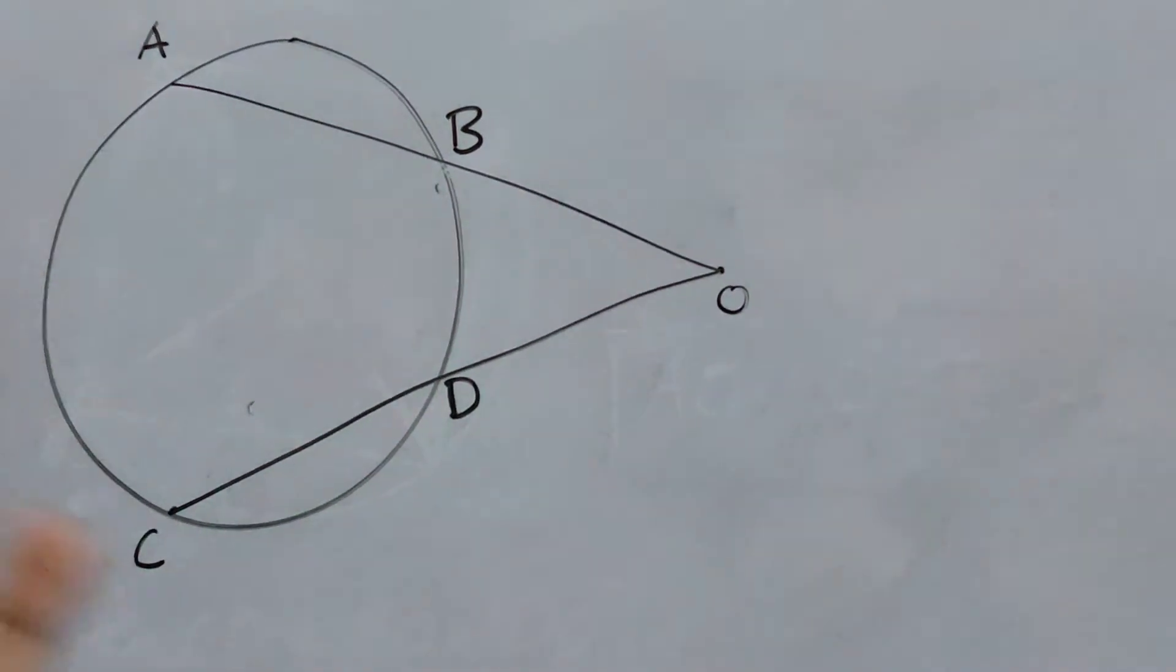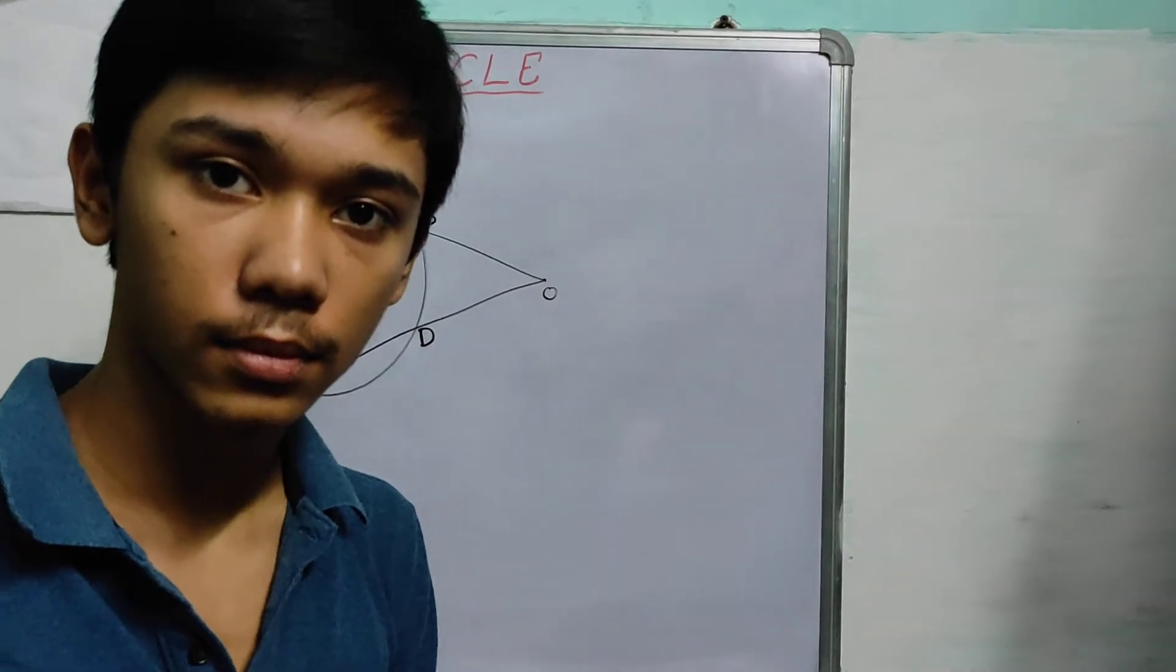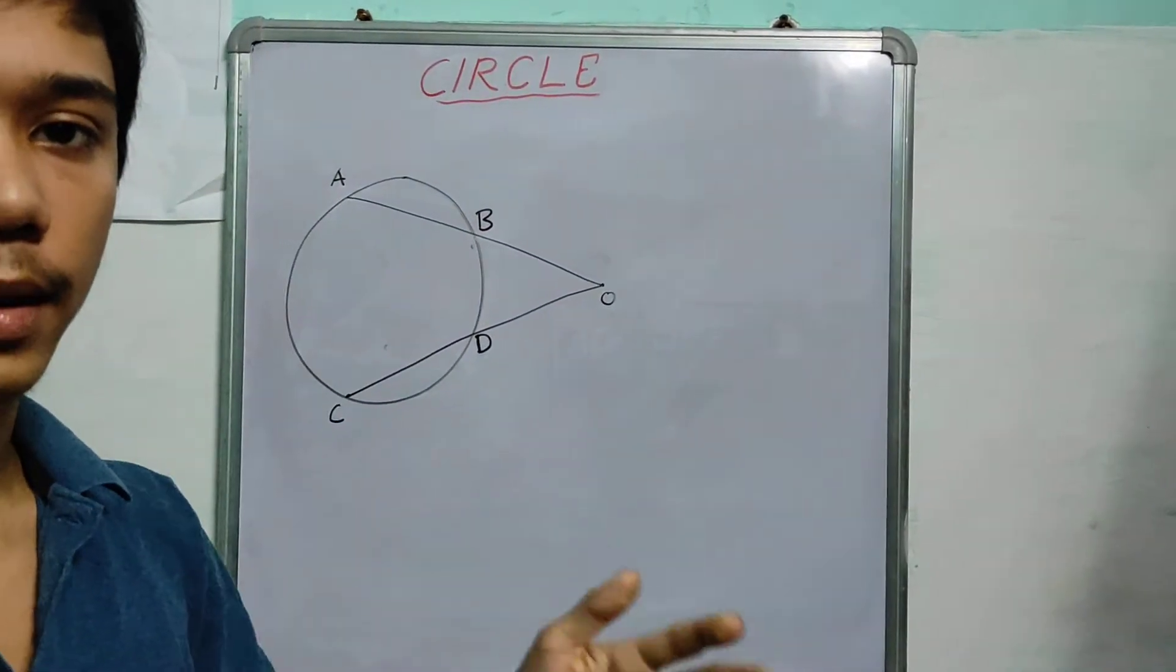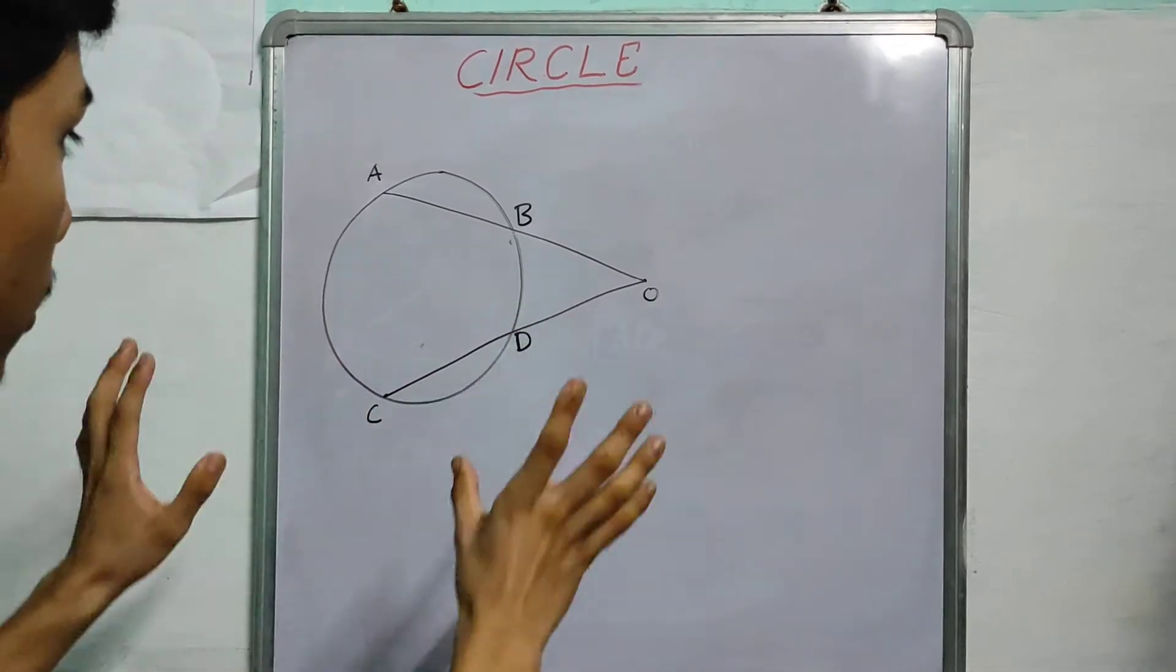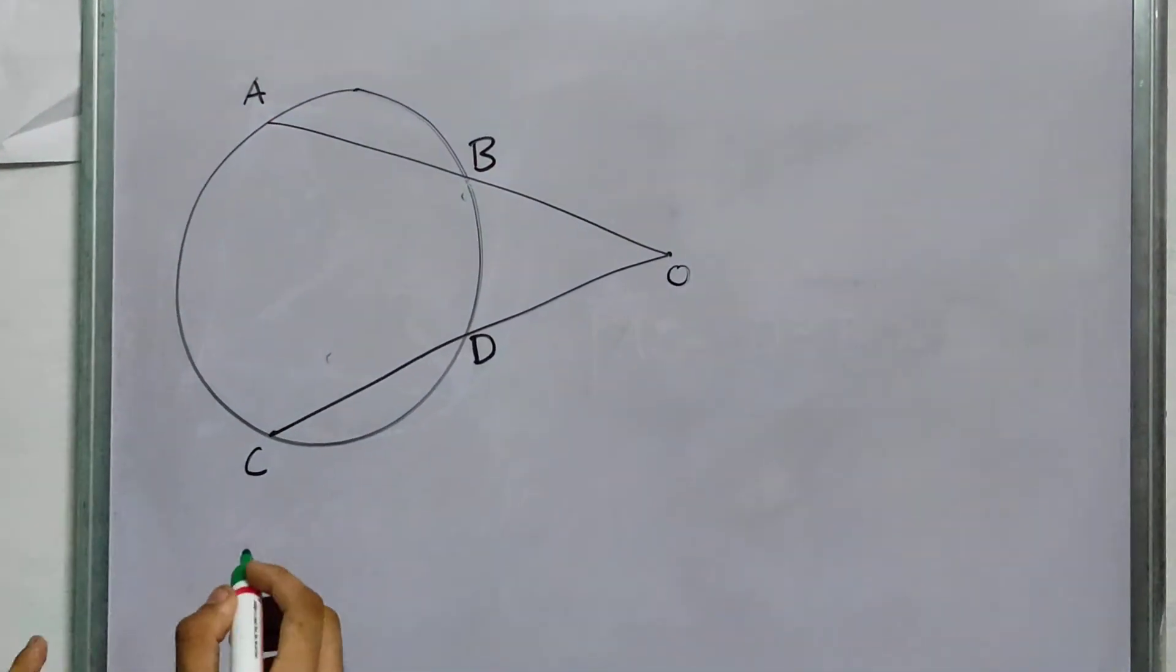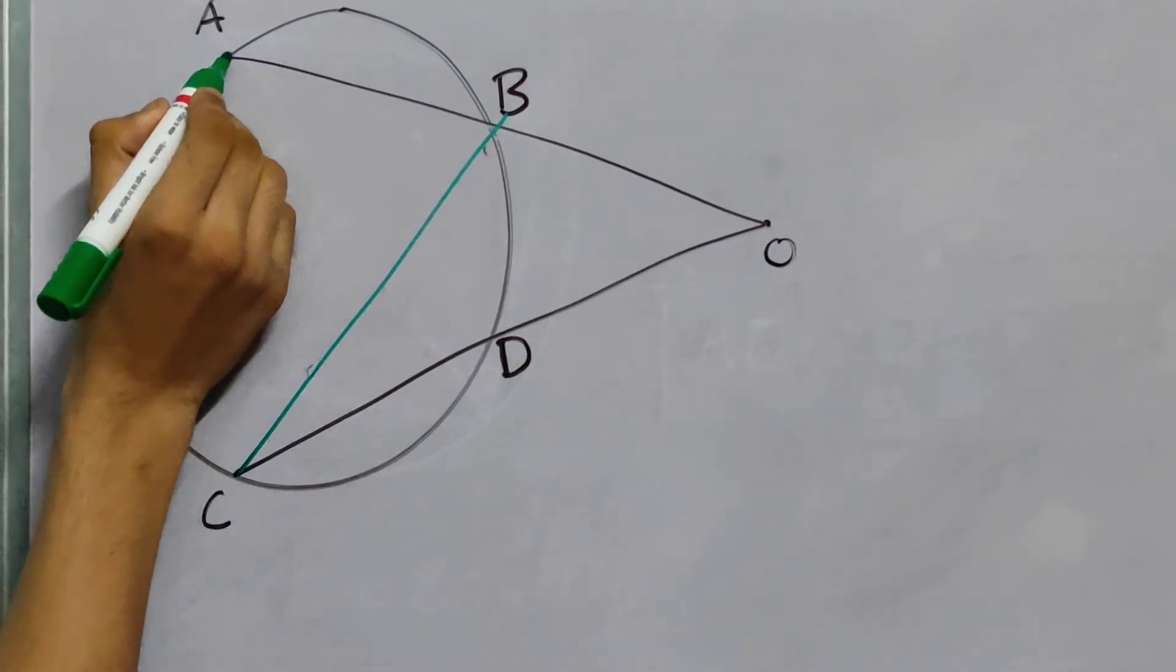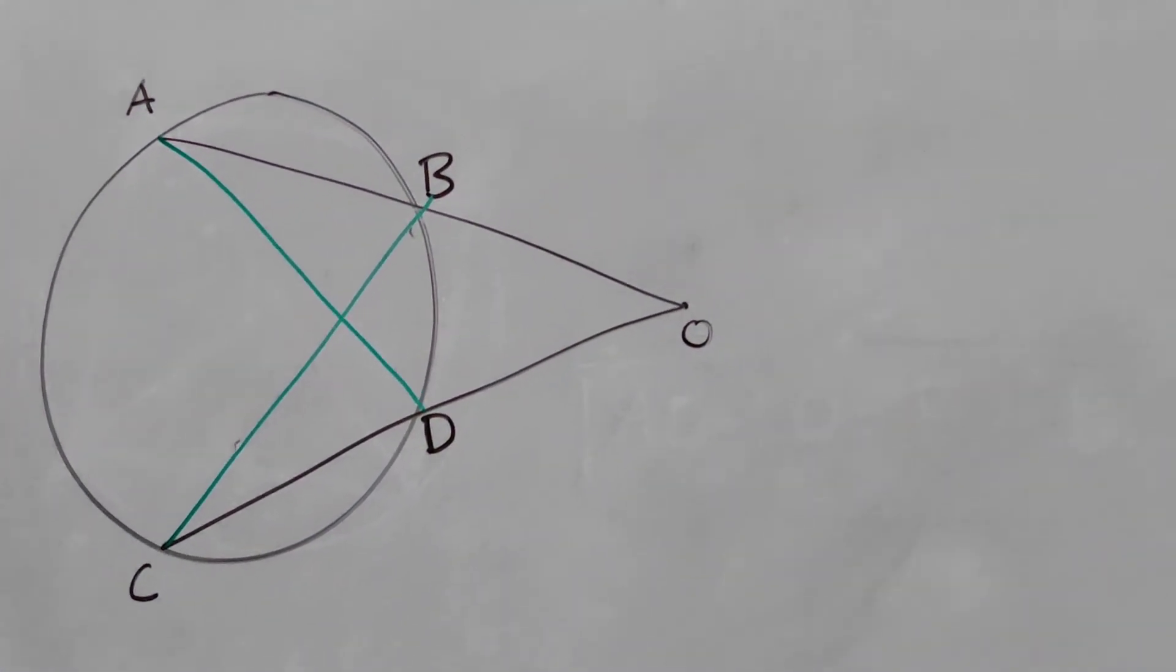We're going to use a similar strategy here. We will do construction, find the angles, then find the similar triangles, use the ratios, and then we get our theorem. Now here's the important part, the construction is always the important part. I'll connect this again, these two again.